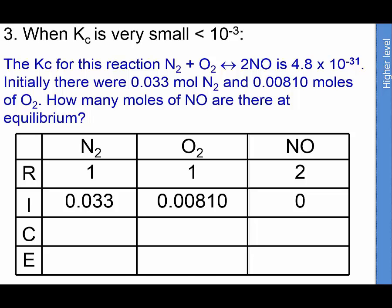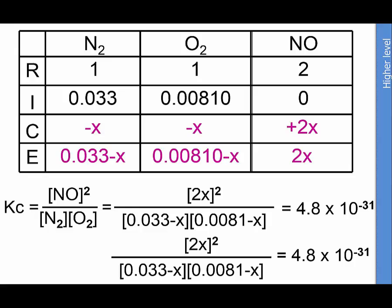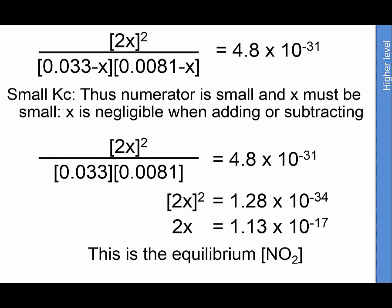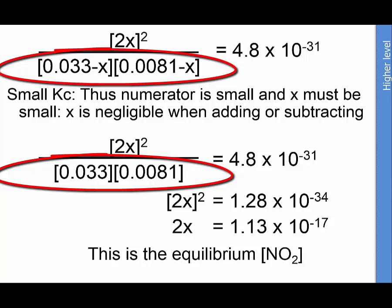This is the last of the harder K problems. Again, write X for the unknown. The trick for these problems is that because K is small, X will be small. If the effect of X is less than a factor of a thousand, we can ignore it.